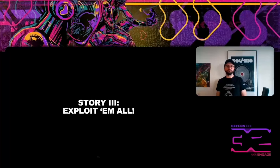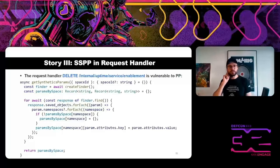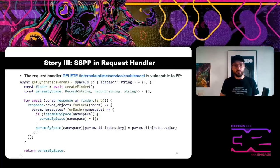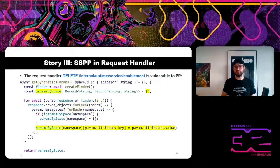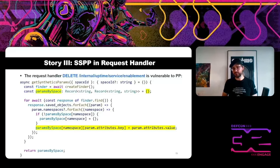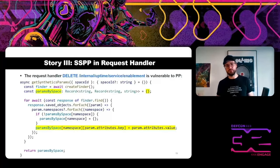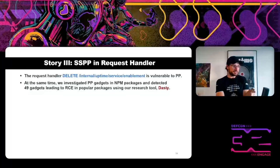Let's look at the next story: another case of prototype pollution and remote code execution. Another case reported by our Silent Spring Node.js queries was prototype pollution in a web handler. It's very simple: we create an empty object — which has a prototype pointing to the object prototype — and we have a line of code: if namespace equals '__proto__' and the key is attacker-controlled, we assign the attacker-controlled value to a property of the prototype. Very simple — you don't even need a script to find it.